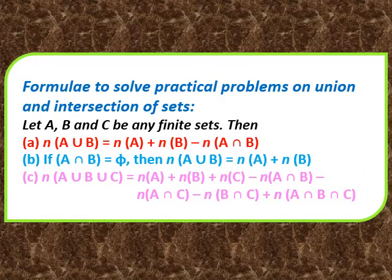For solving problems on union and intersection of two or more sets, I am going to give you three formulas. Since derivation is not in the CBSE syllabus, I am not going to invest much time on that. We have three sets A, B and C which are non-empty and finite sets. Finite means countable elements are there. The number of elements in A union B equals NA plus NB minus NA intersection B.